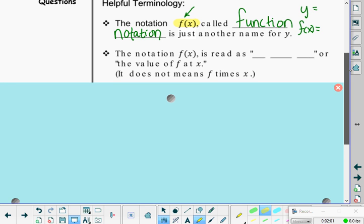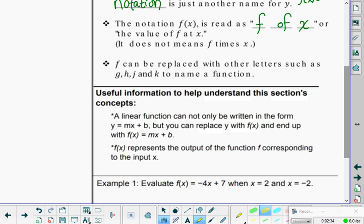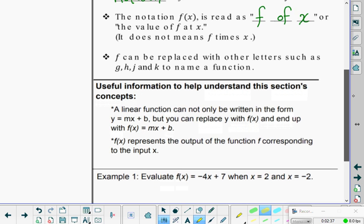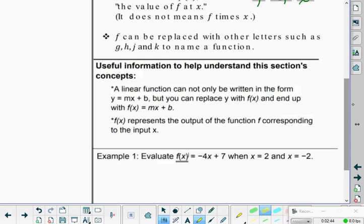The notation f parentheses x parentheses is read as f of x, or the value of f at x. It does not mean f times x. So make sure you realize, it's not a multiplication symbol there. It's just f of x, or f evaluated at x. f can be replaced with other letters, such as g, h, j, and k, to name a function. So we'll see some of that in our work today, where we use various letters instead of just f.